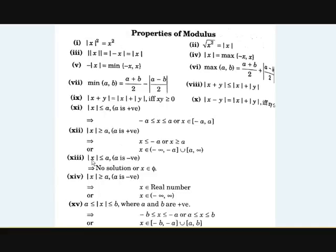The thirteenth property: modulus x less than or equal to a where a is negative — there is no solution for x. And if modulus x is greater than or equal to a where a is negative, then x is any real number. If modulus x is between two positive variables a and b, then x will be in (−b, −a] union [a, b).